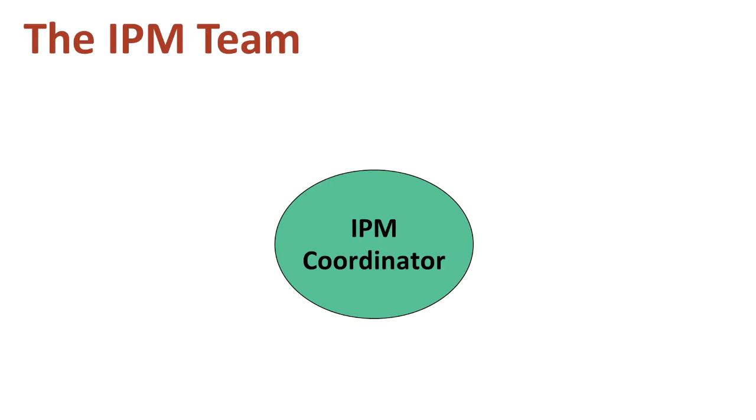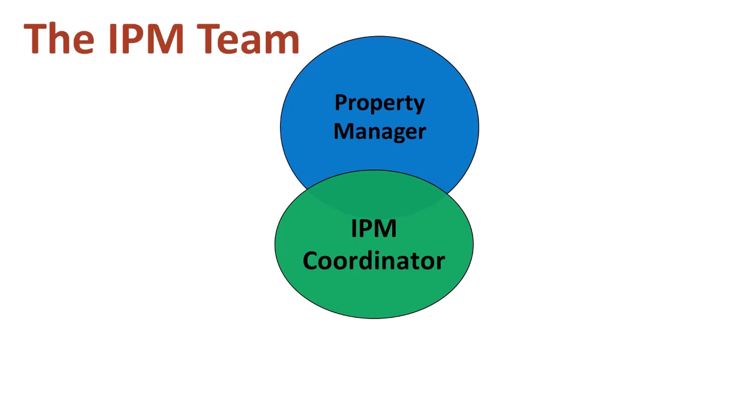Let's discuss the various roles that must be filled to implement an effective IPM program. IPM is not a one-person job — everyone who lives or works in housing has a role on the IPM team. The IPM coordinator makes sure all pest management jobs are funded, completed, and recorded in the IPM log. Property management can't outsource the responsibility for quality assurance of an IPM program.